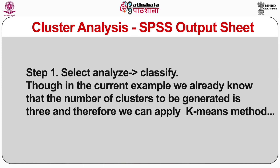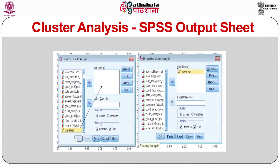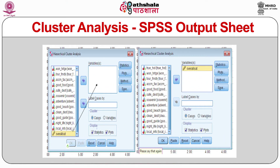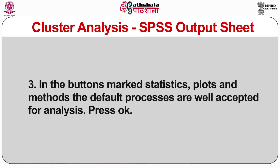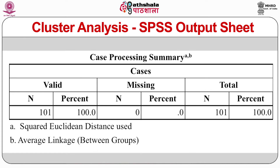The steps are as follows. Step one: select Analyze and then click Classify. Though in the current example we already know that the number of clusters to be generated is three, and therefore we can apply the k-means method directly, we will first apply the hierarchical clustering method for discussion purposes. Step two: move the variable chosen for analysis into the box — in this case, satisfaction. Step three: in the buttons marked Statistics, Plots, and Methods, the default processes are well accepted for analysis; then press OK. Step four: the first output table is the case processing summary, which indicates there were 101 respondents in the research.